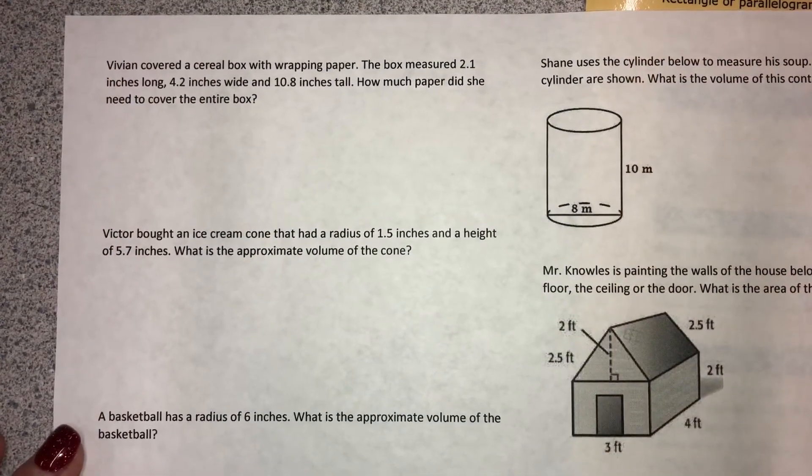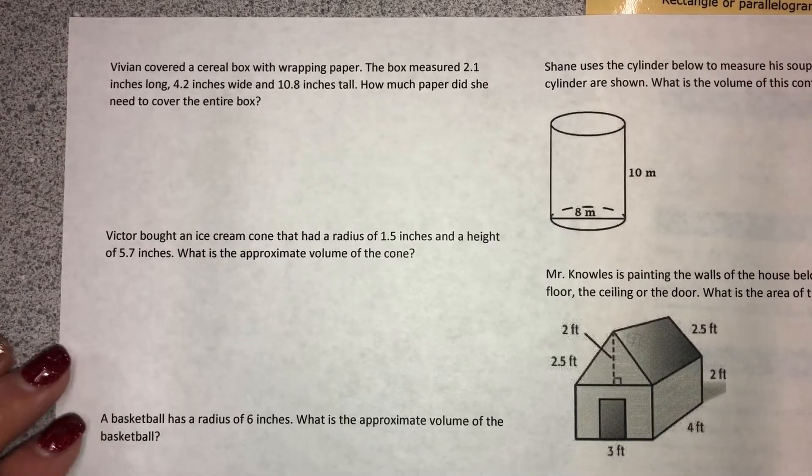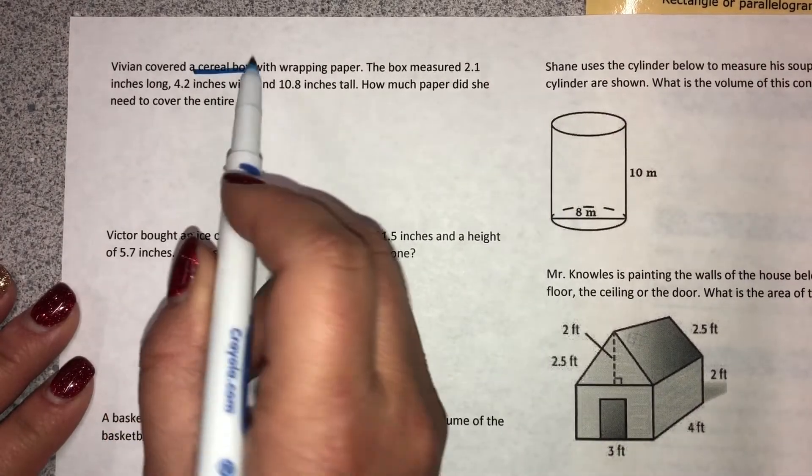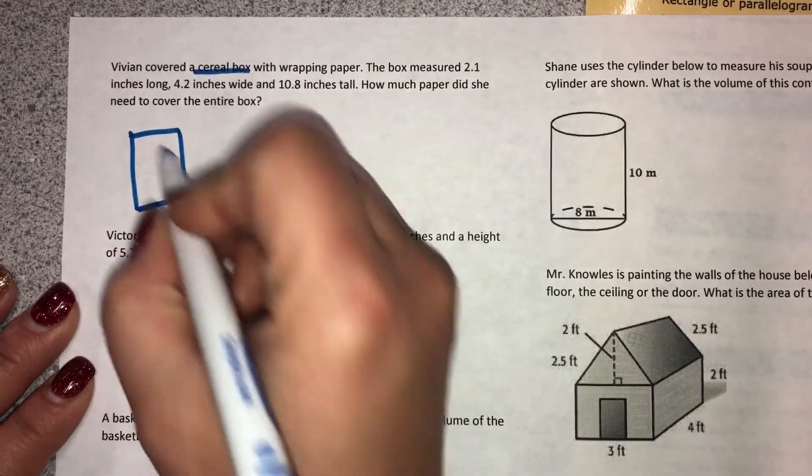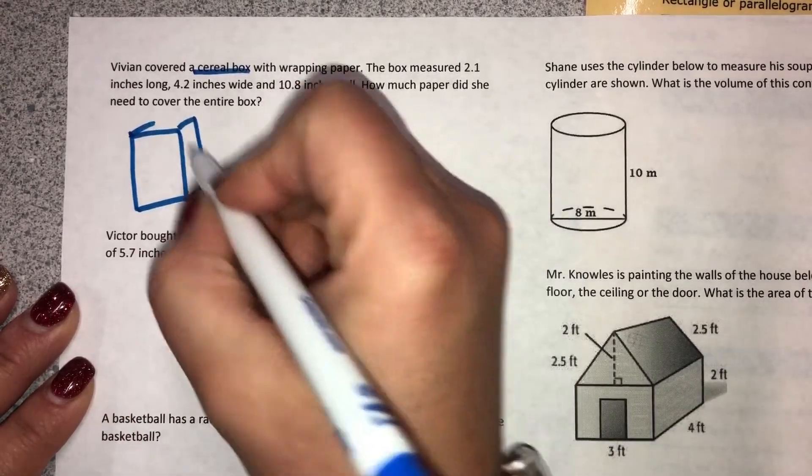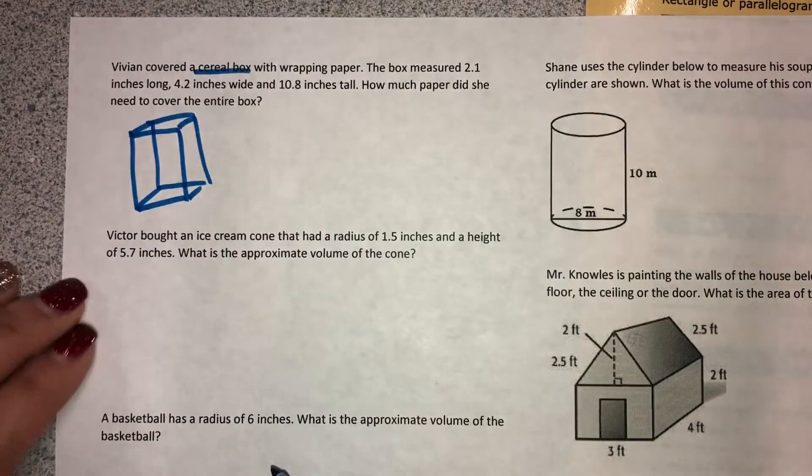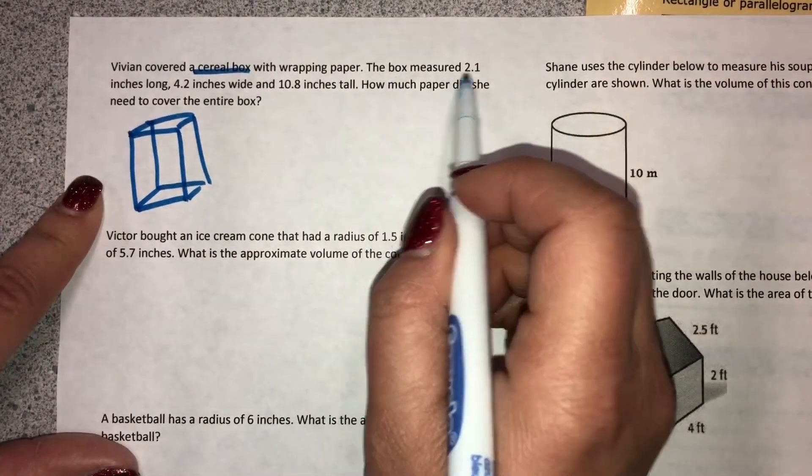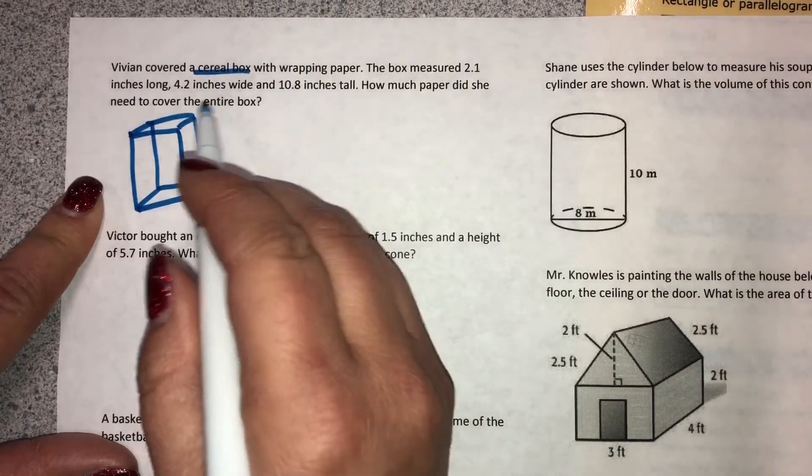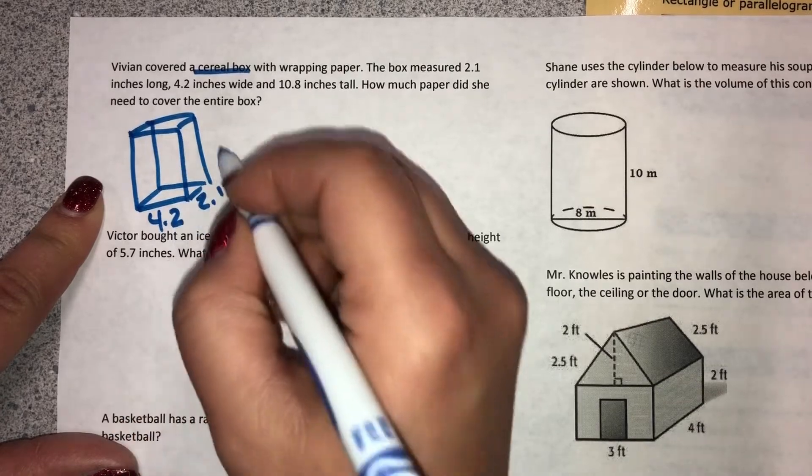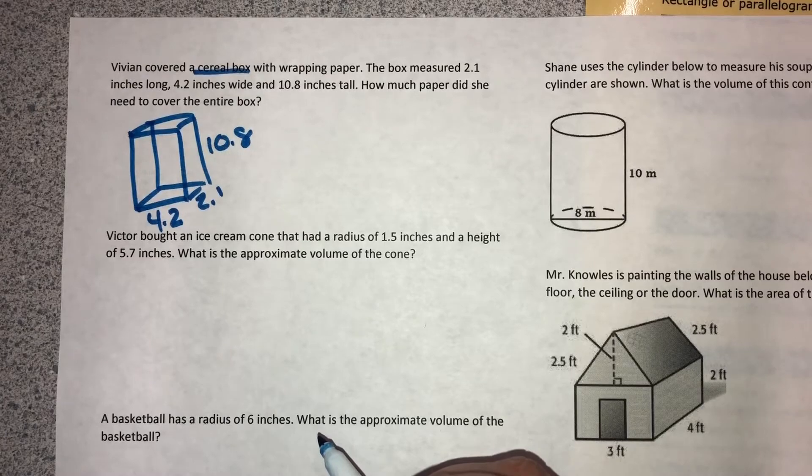Make sure you pause the video and try and solve these on your own. Come back to the video when you need to. So it says Vivian covered a cereal box with wrapping paper. Anytime it gives you a shape, you want to draw the shape. So I'm going to draw out a cereal box real quick so that I know what shape I'm talking about. So I'm talking about a rectangular prism. The box measured 2.1 inches long, 4.2 inches wide, and 10.8 inches tall. How much paper did she need to cover the entire box?